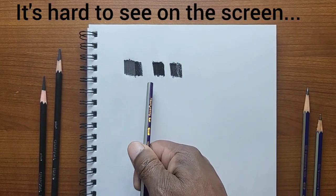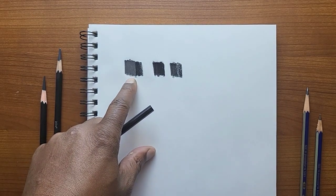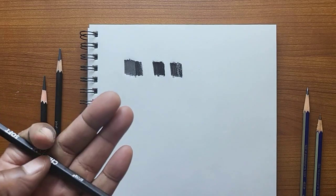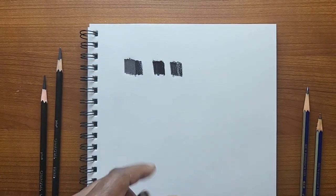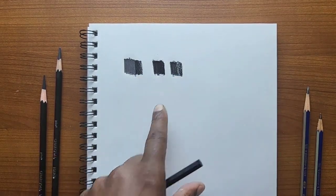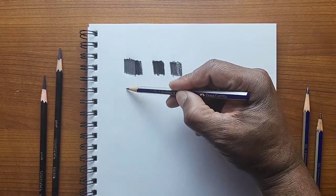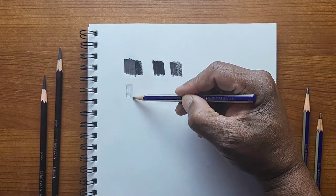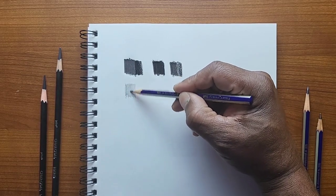But for here, the graphite pencil creates a kind of a slick surface. And slick surfaces and charcoal do not work well together. So in order for this to work, you would first have to take the 2B and go light. Don't burnish it. Just go light, like you're building up to a darkness.